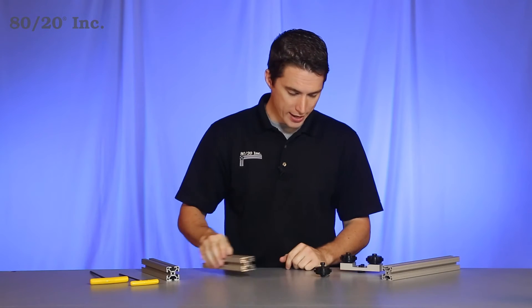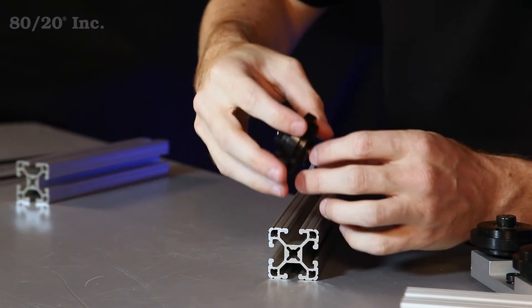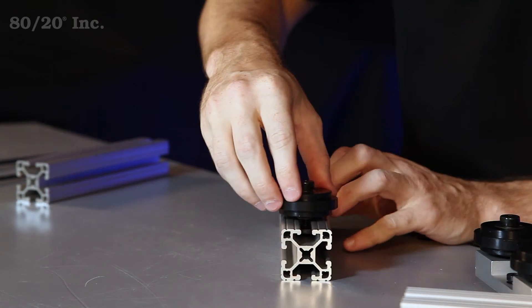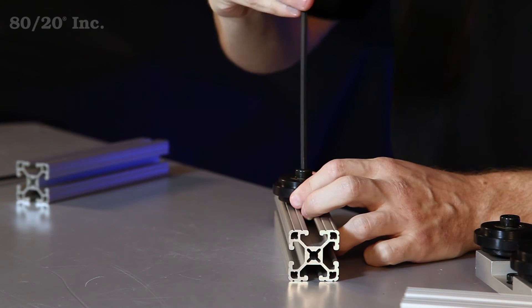If you're going to do it without a bracket, simply take the wheel and loosen up the T-nut, and you'll slide it into the open T-slot. You'll find your location and then you'll tighten it down.